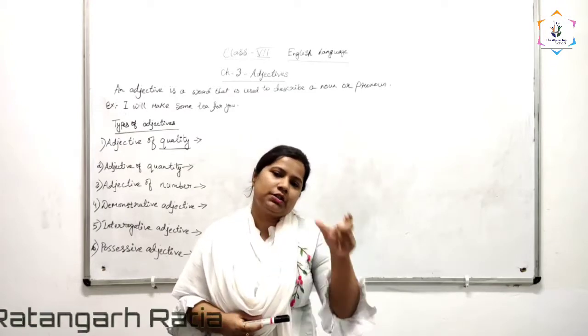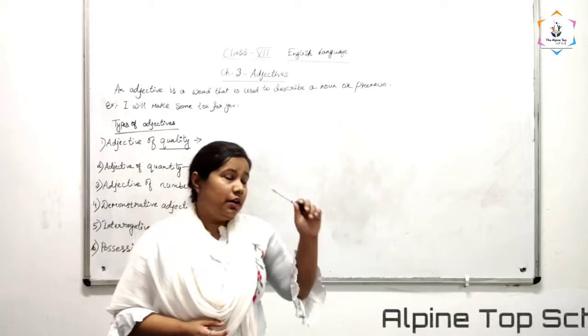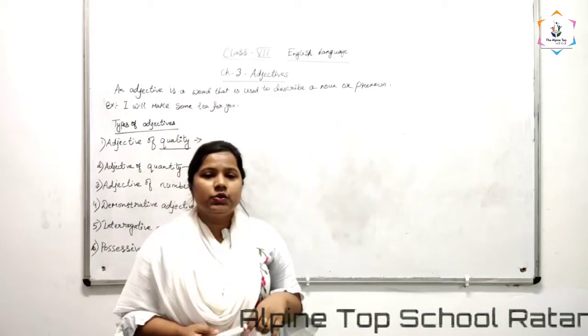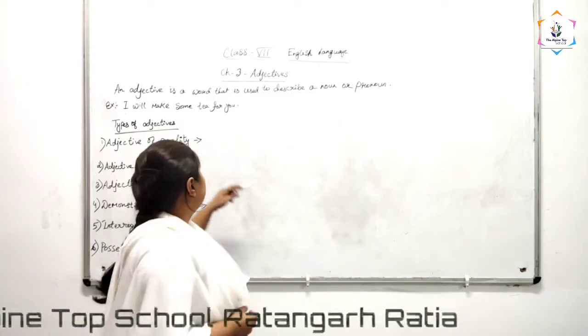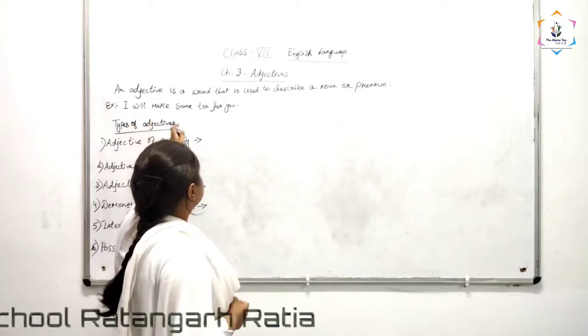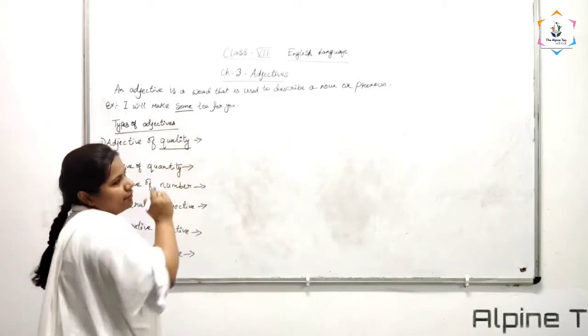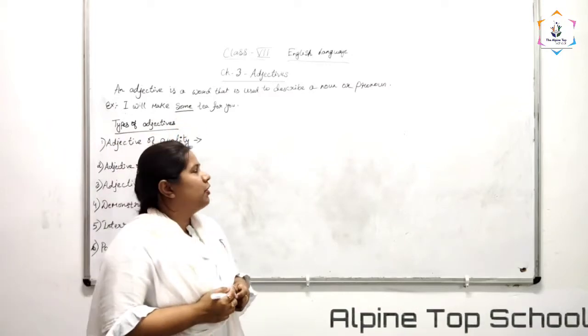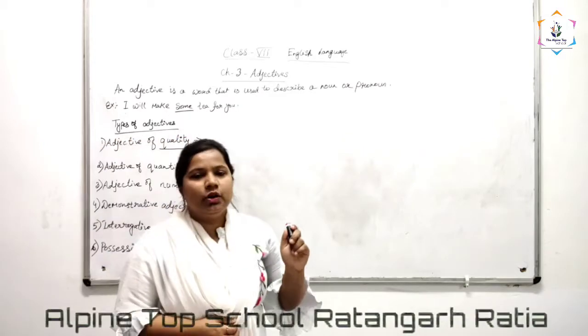A word which describes anything is called an adjective. An adjective is a word that is used to describe a noun or a pronoun. For example, I will make some tea for you. Here, some is your adjective because it is describing how much tea you are going to make for your friend.